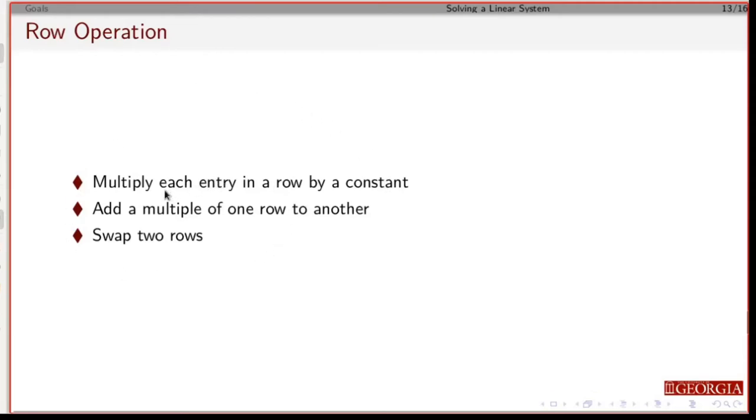If I take a number and multiply every entry in a row by that constant, that's one operation. If I take two rows and add them together, that's an operation.